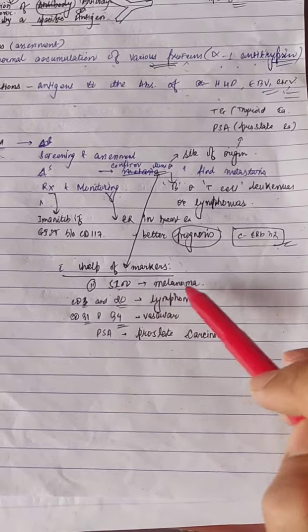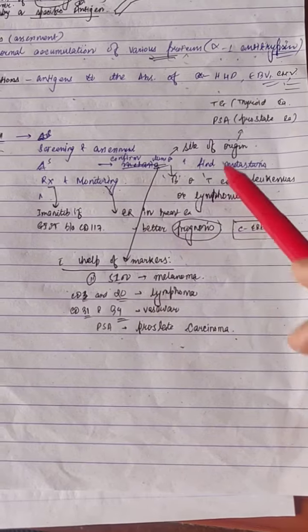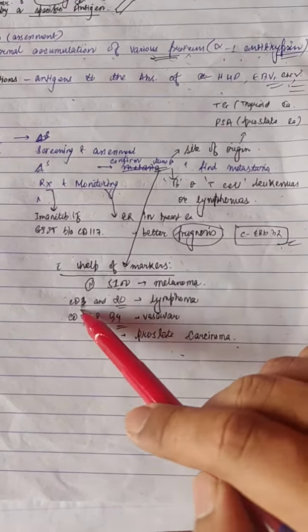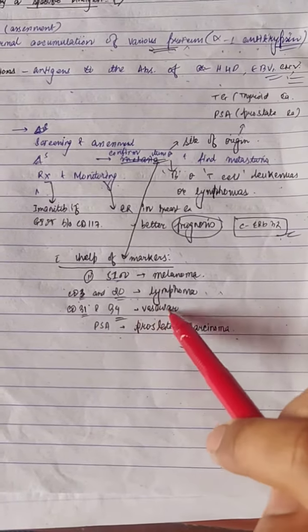S100 for melanoma, PACE for prostate cancer, thyroglobulin for thyroid cancer, CD3 and CD20 for lymphoma, CD31 or CD34 for vascular tumors.